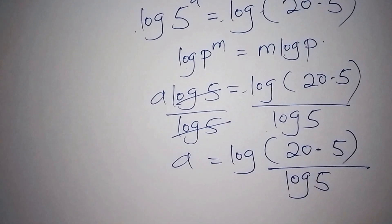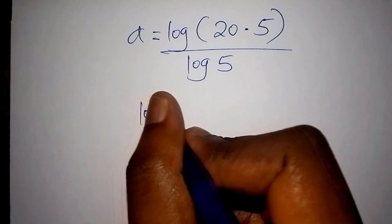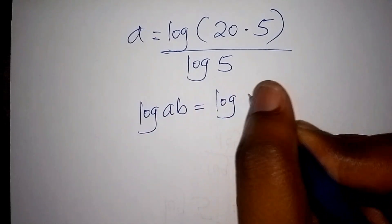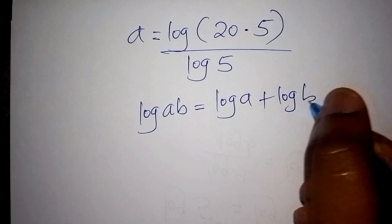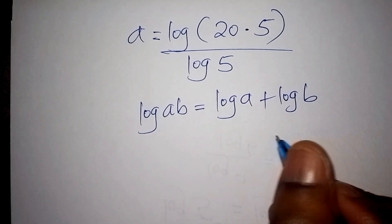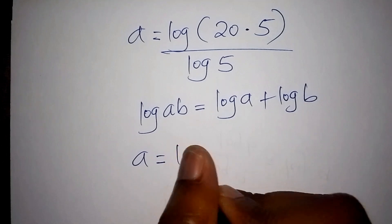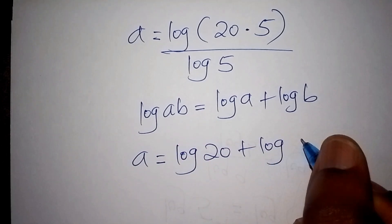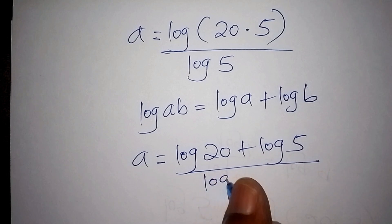Our answer doesn't stop here. Before we proceed, we use the rule that log of a times b can be written as log of a plus log of b. Applying this, we now have a equals log of 20 plus log of 5, all over log of 5.